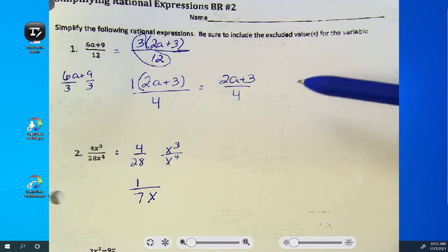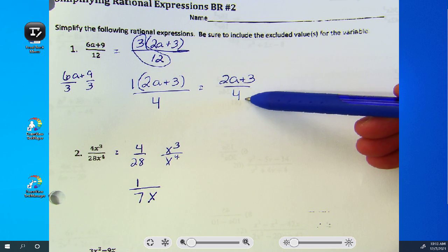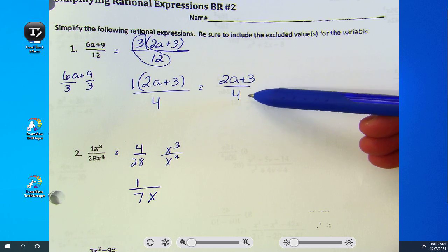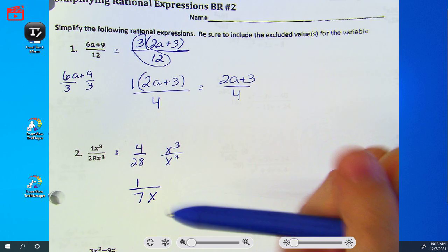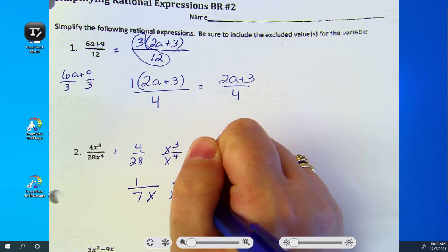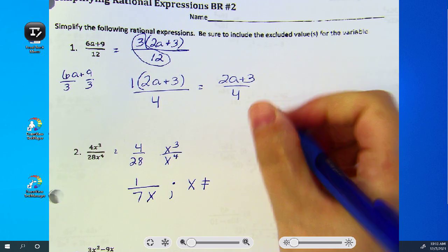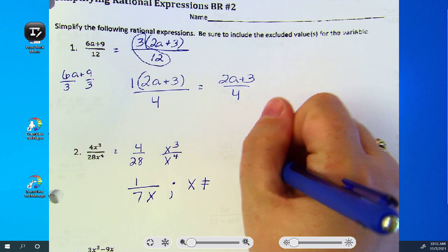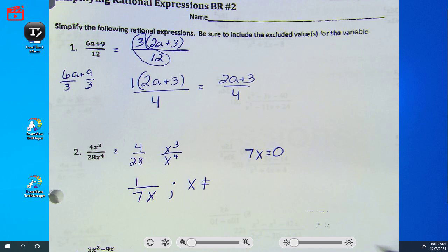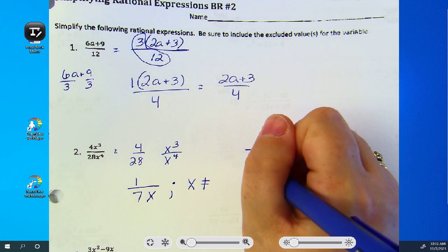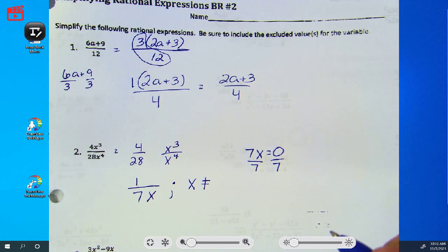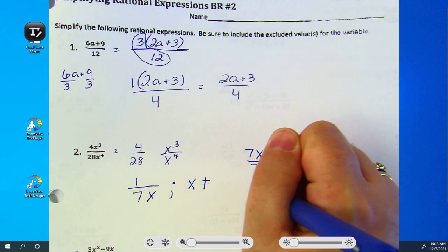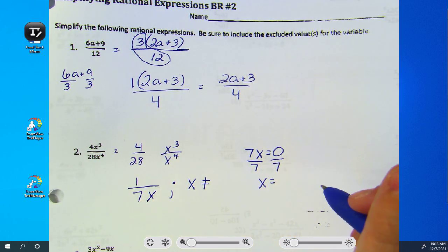Let's look back at number one for a minute. Notice how there's no variable in the denominator, there's no restrictions. Here we have a restriction because there's a variable in the denominator. What can x not equal? Set your seven x equals zero. Divide by seven. What's zero divided by seven?